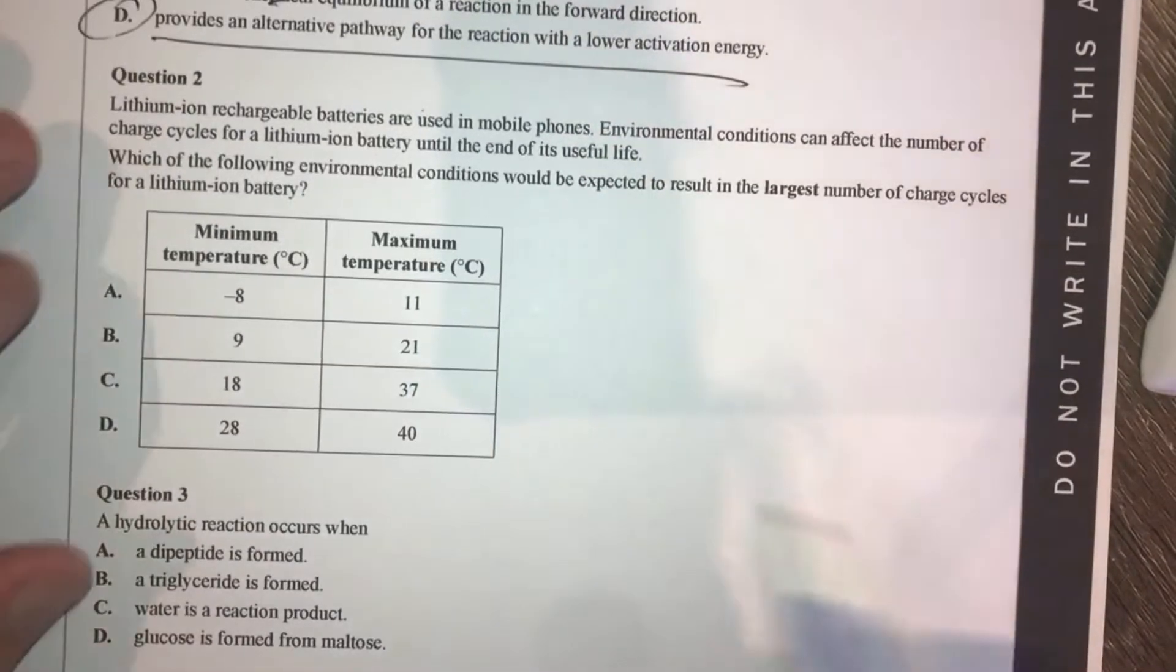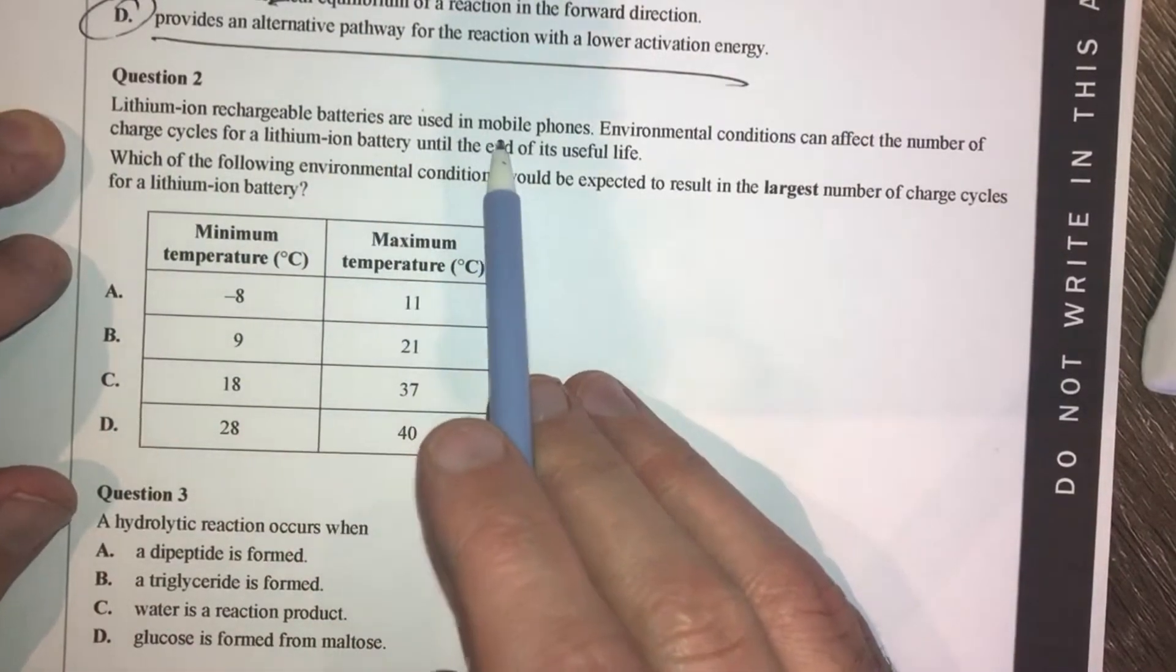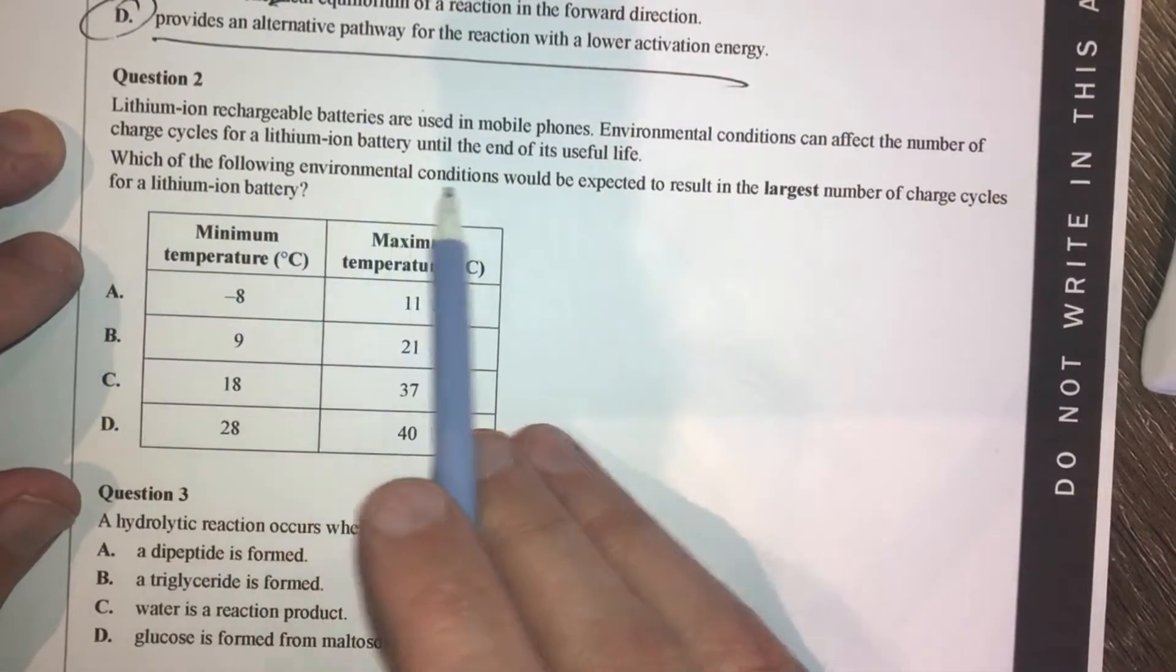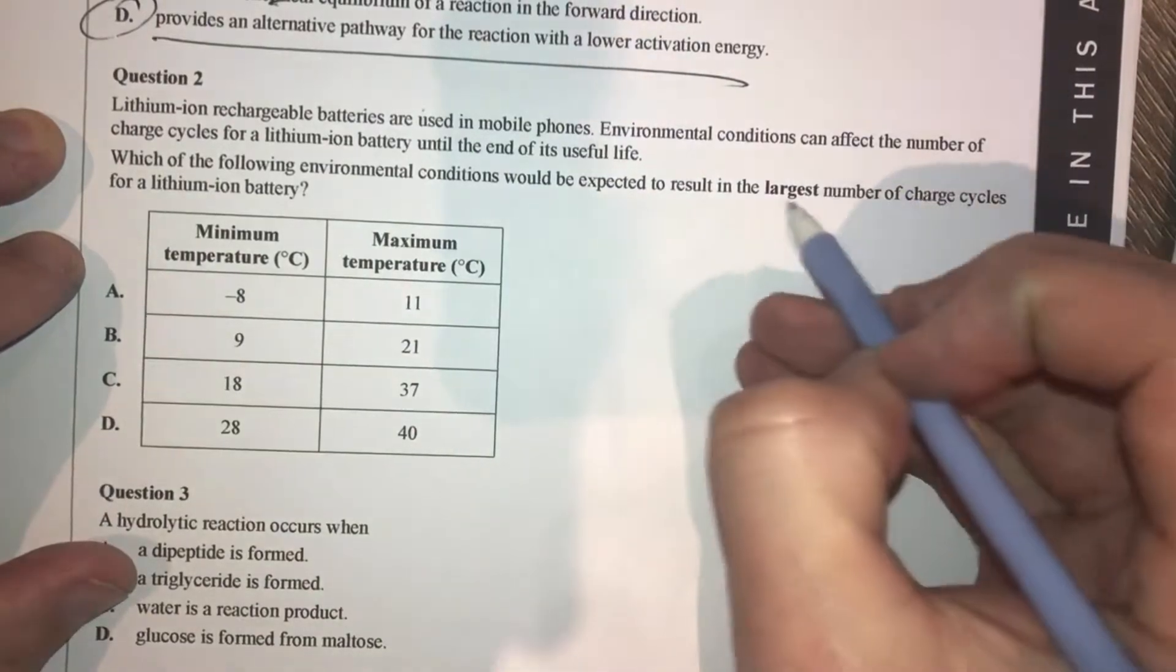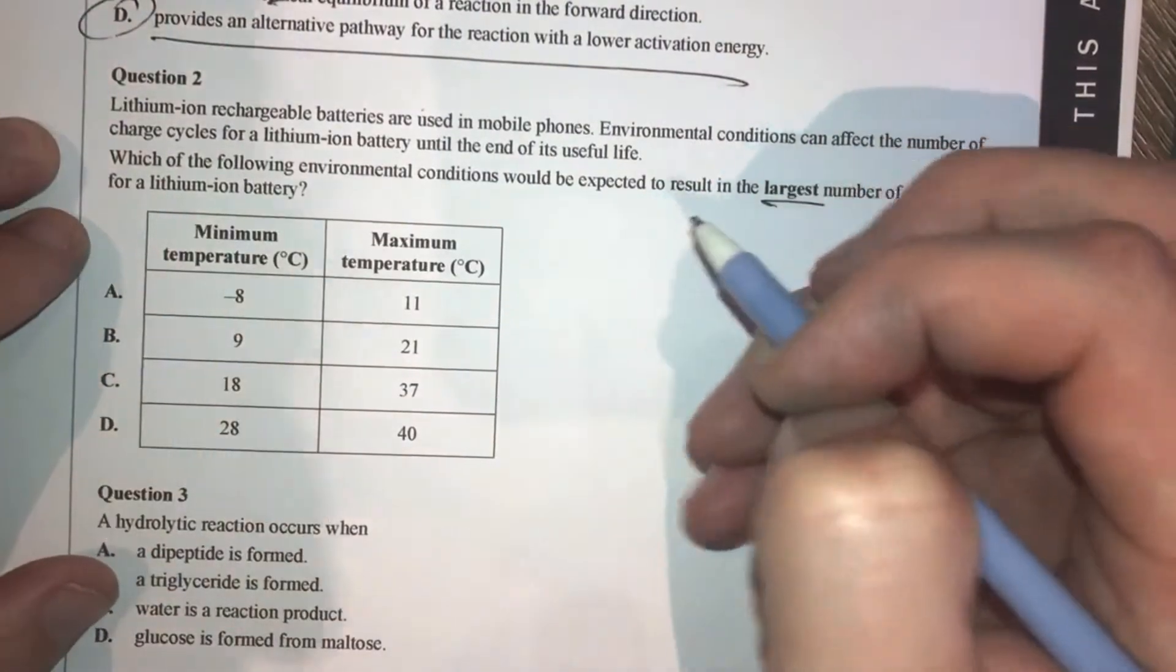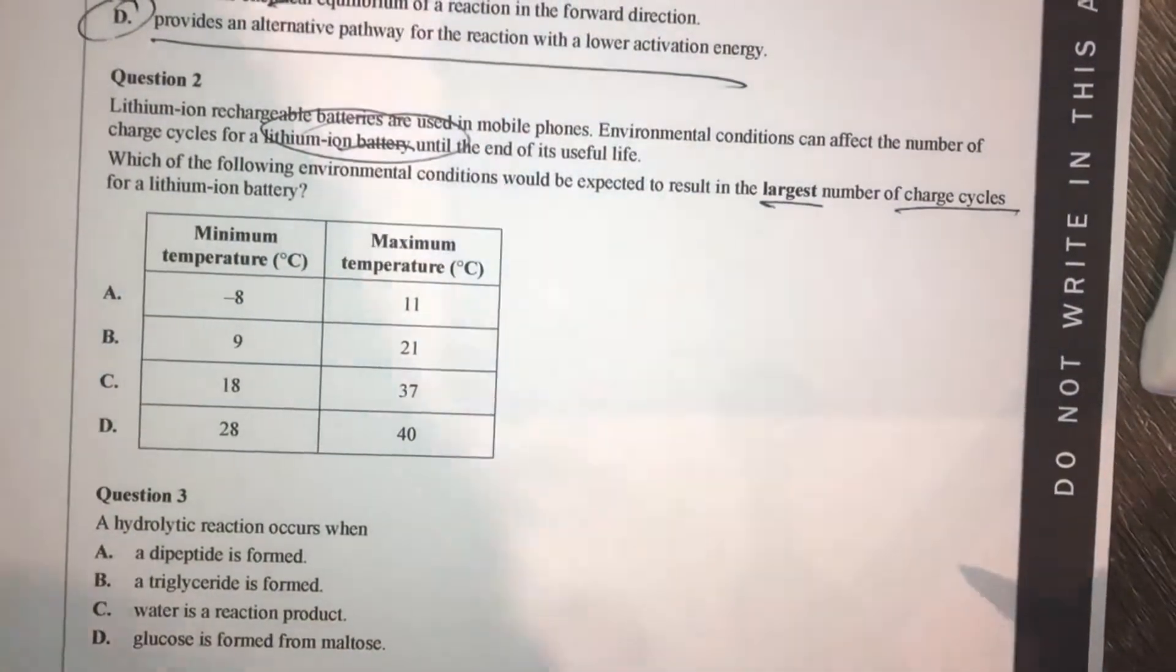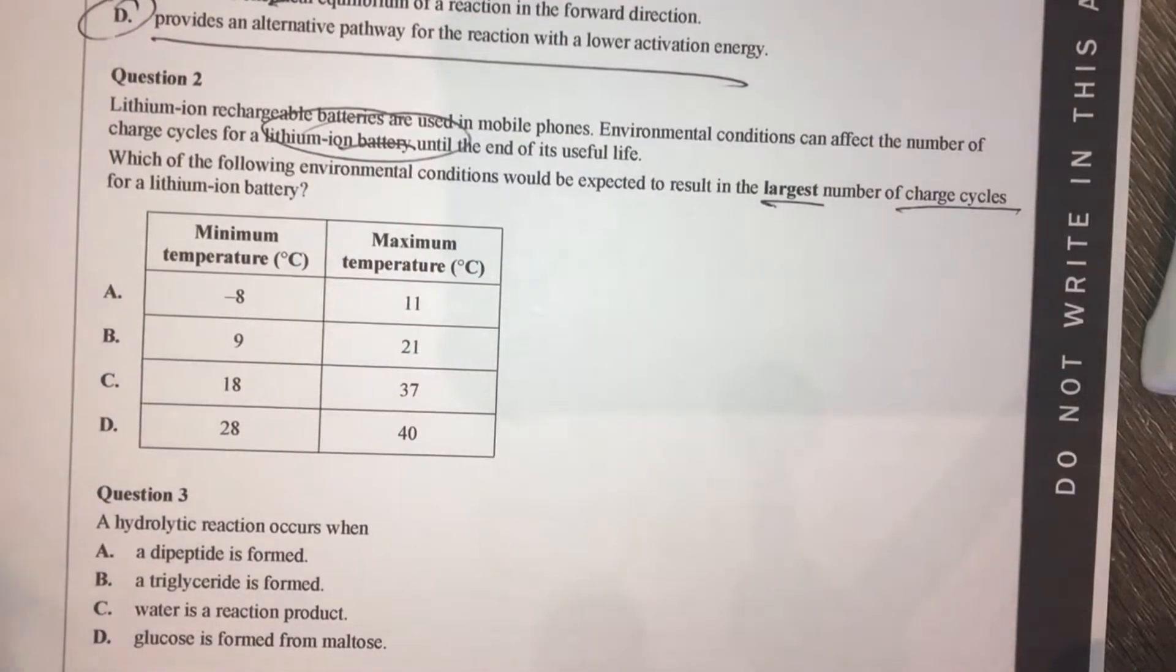Question 2 in this exam talks about lithium-ion rechargeable batteries used in mobile phones. Which of the following environmental conditions would be expected to have the largest number of recharge cycles? Now batteries, what do we need to know? Batteries work best when they are in room temperature, or a cold room temperature. Basically, the main thing about batteries is they don't like to be in extreme temperatures.